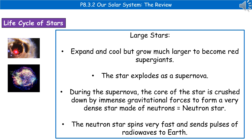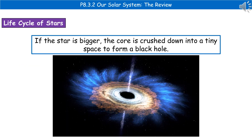The other scenario is what happens to the death of a large star. They still expand and cool, but these ones grow much larger to become a red supergiant. The star will then explode as a supernova, and during the supernova the core of the star is crushed down by immense gravitational forces to form a very dense star made of neutrons, which has the really surprising name of a neutron star. The neutron star itself spins very fast and sends pulses of radio waves to Earth that we can detect. If it's a very big star, the core can be crushed into a tiny space to form a black hole, where the forces of gravity are so immense that not even light can escape it.